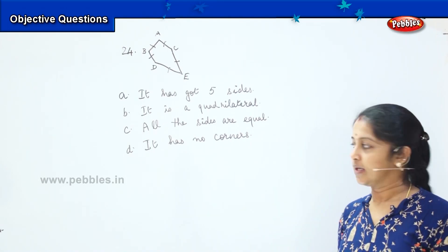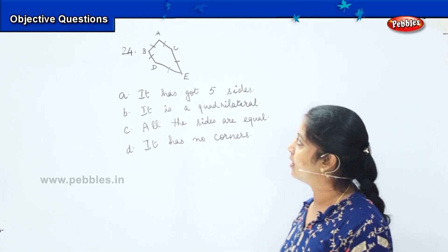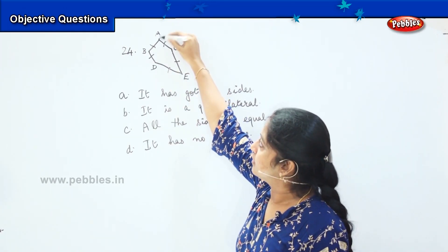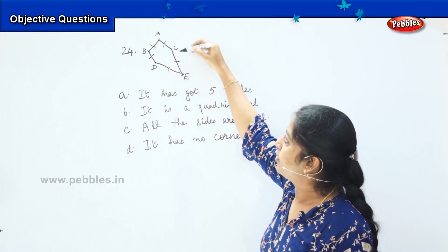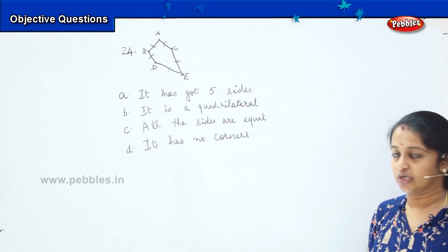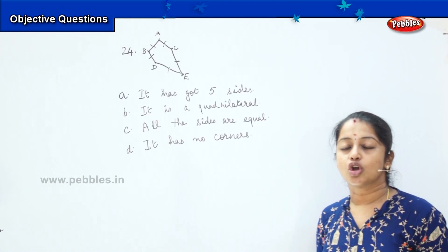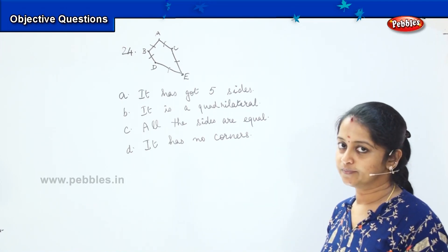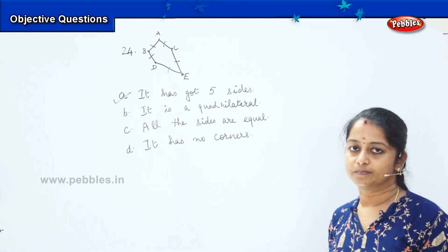How about the last one? It has got no corners. See the figure — how many corners are there? One, two, three, four, five. There are five corners in this picture, wherein my option says that it has got no corners. So which is the right option? Option A is the right answer.